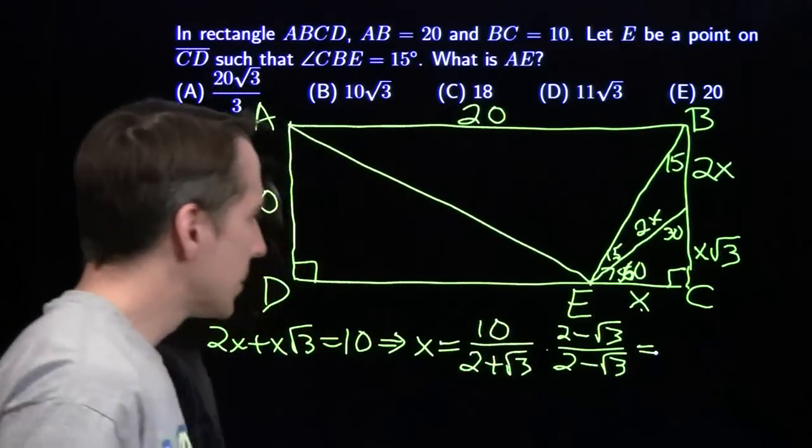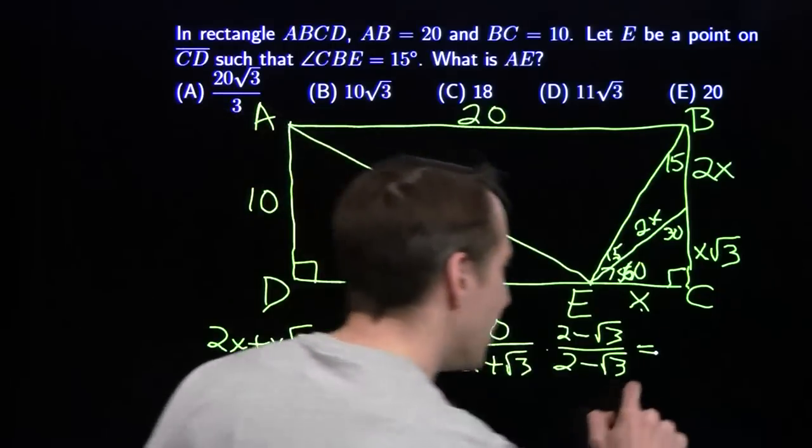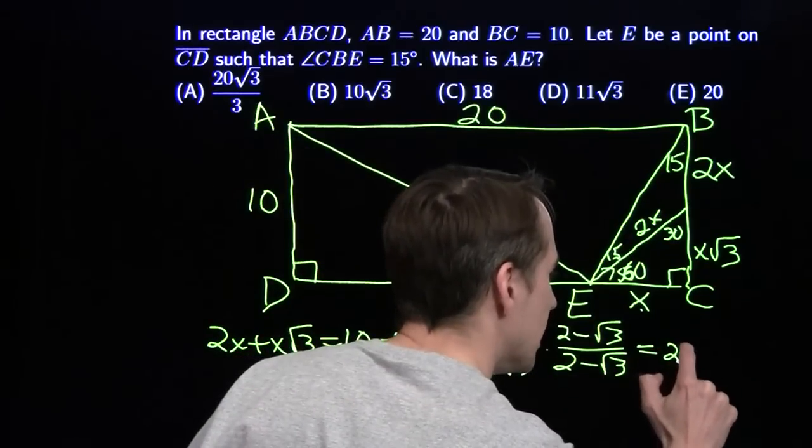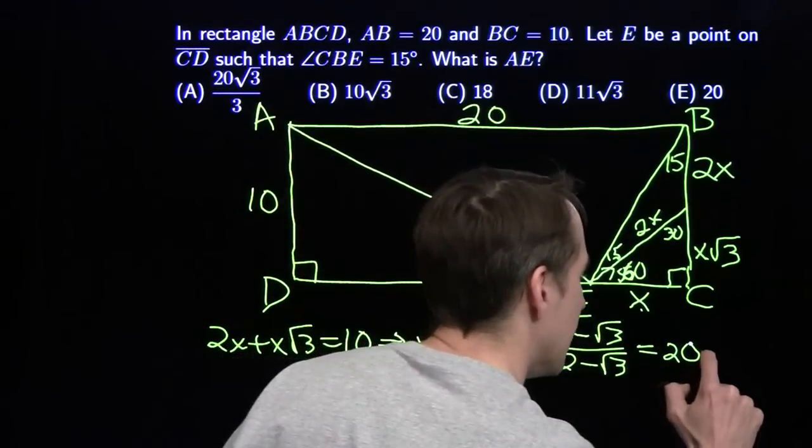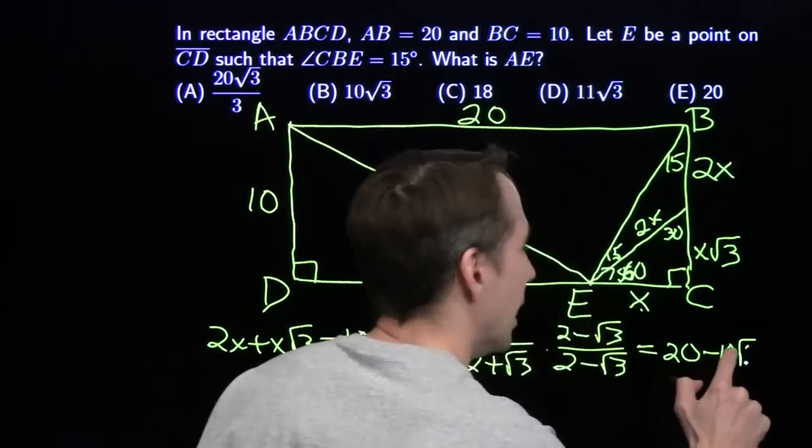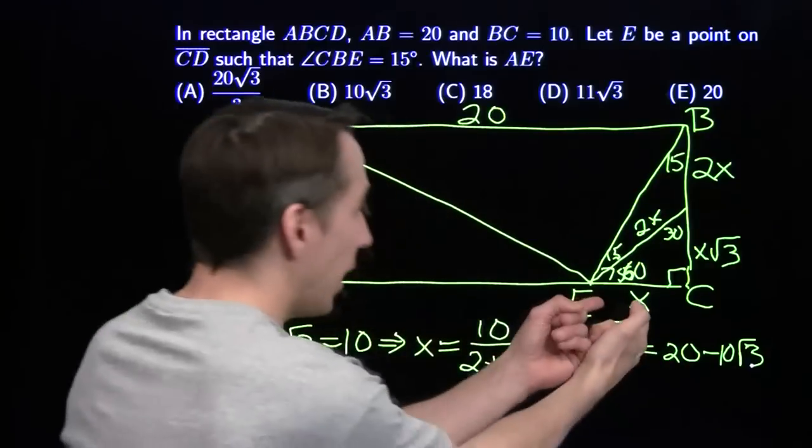And we multiply at the top. We get 2 times 10 is 20 minus 10 root 3. And that is our value of x.